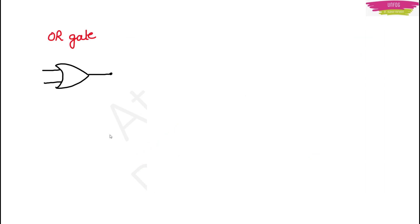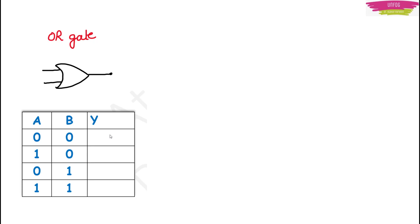Let's talk about OR gate first. OR is nothing but addition in digital electronics. If you make a truth table with inputs A and B — 0,0 / 1,0 / 0,1 / 1,1 — the output is A plus B. So: 0 plus 0 is 0; if inputs are 1 and 0, output is 1; if inputs are 0 and 1, output is 1; and if both inputs are 1, you add them and the output is high — that means 1. This is about OR gate and this is the symbol of the OR gate.